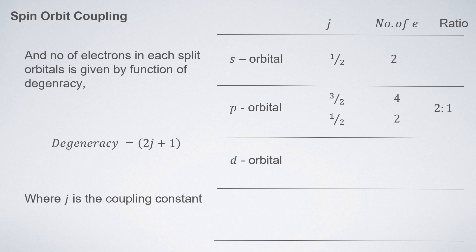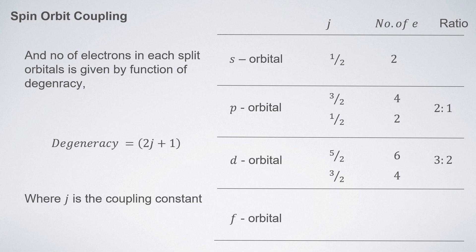For d orbitals, j = 5/2 gives degeneracy 6, and j = 3/2 gives degeneracy 4. Out of 10 d electrons, 6 and 4 are in different energy states, so the intensity ratio of the split peaks is 3:2. For f orbitals, j = 7/2 gives degeneracy 8, and j = 5/2 gives degeneracy 6. Out of 14 f electrons, 8 and 6 are in different energy states, giving a peak ratio of 4:3.